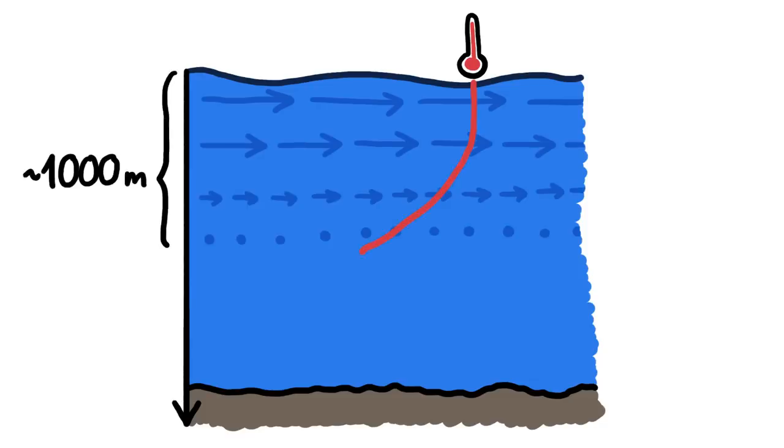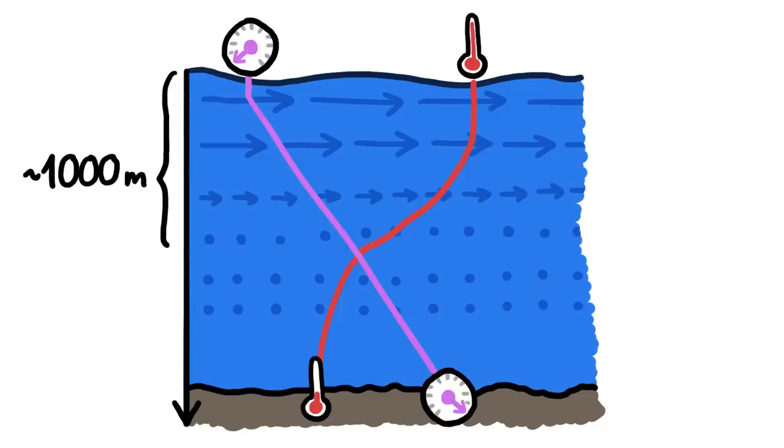Around 1,000 meters or so down, depending on where on the planet you are, the ocean's temperature bottoms out, and the effect of pressure takes over, causing the speed of sound to increase again.